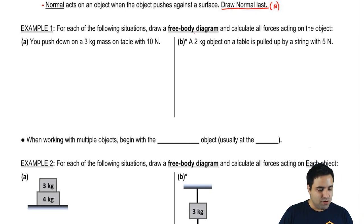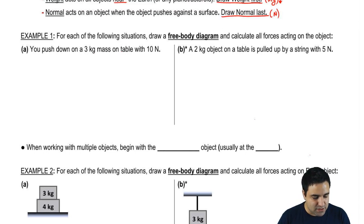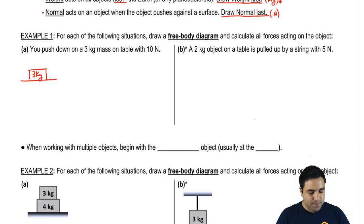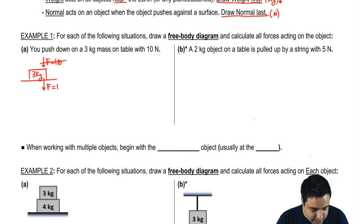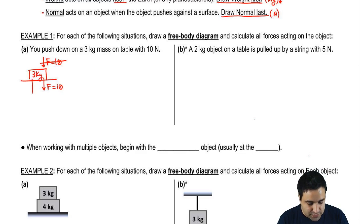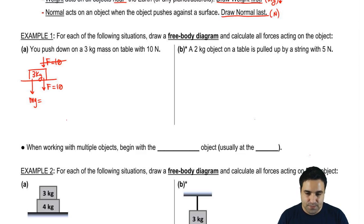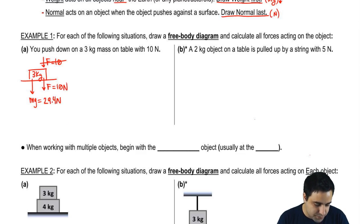For the following situations, draw a free body diagram and calculate all the forces acting on the object. You push down on a three kilogram mass on the table with a force of 10. I don't like drawing forces as pushes — I draw them as pulls — so F equals 10. The first force I'm supposed to draw is mg, the force of gravity. mg is mass times gravity, so it's three times 9.8, which gives us 29.4 newtons.